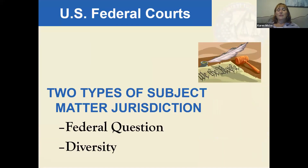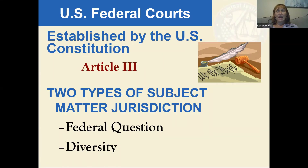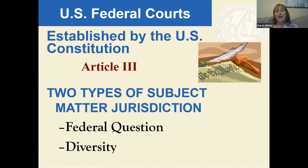Now let's look at the federal courts. The federal court system was created by the U.S. Constitution — specifically Article Three, which requires one Supreme Court and gave authority to the federal legislature to create all other courts. This was done through the Judiciary Act of 1789. The Supreme Court is the only court specifically listed in the Constitution; Congress created all the lower courts.